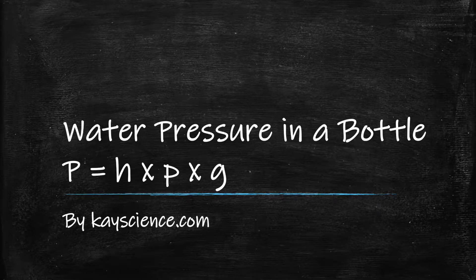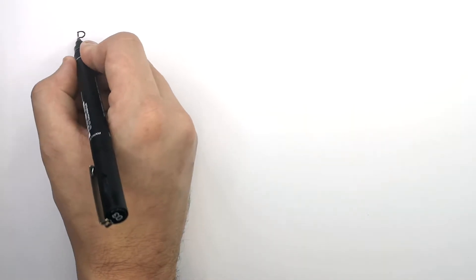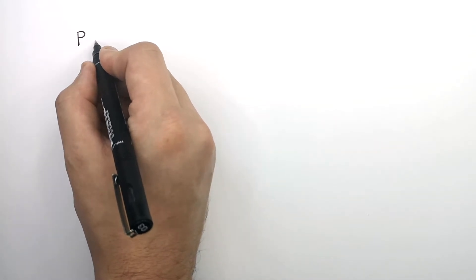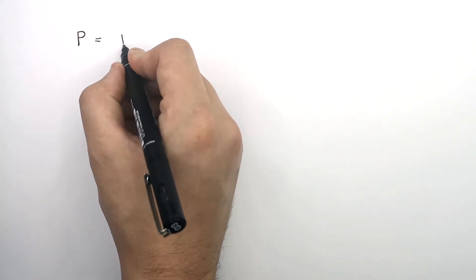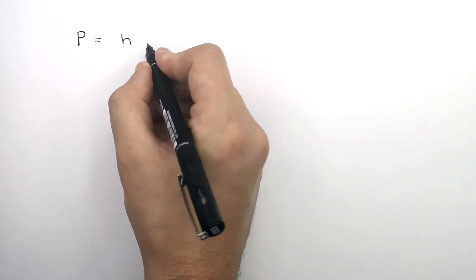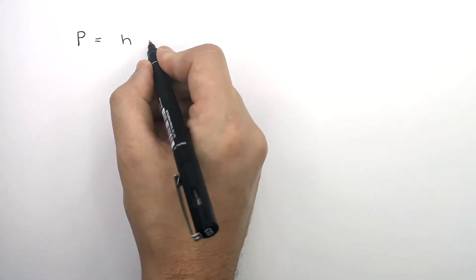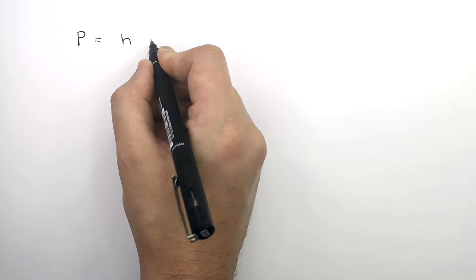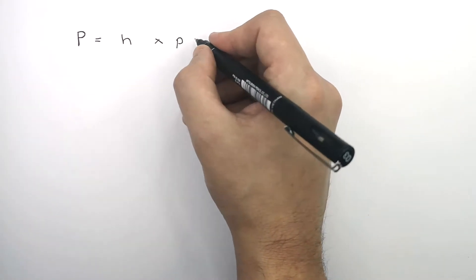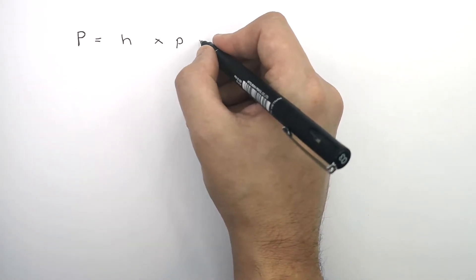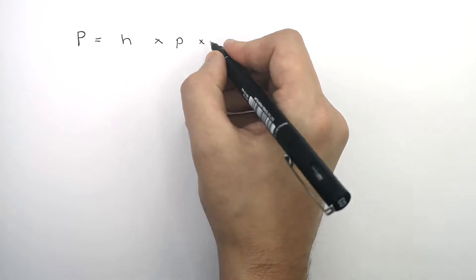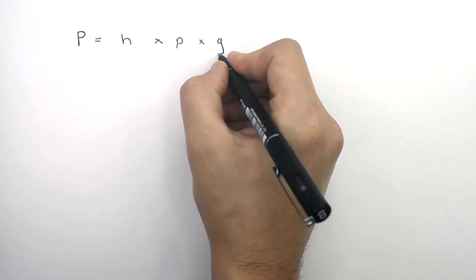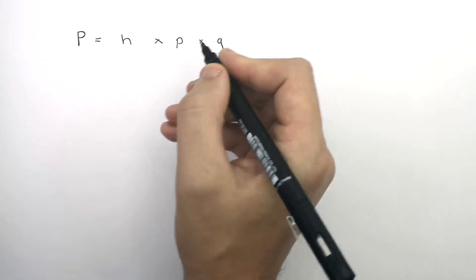Water pressure in a bottle by kscience.com. P, the pressure due to a liquid, equals H, the height of the liquid above that point — which is the depth — times by P, the liquid's density, times by G, the gravitational field strength.